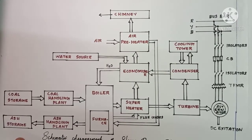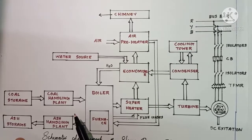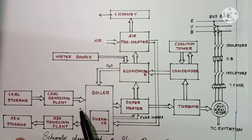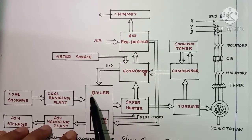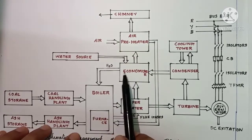At the coal handling plant, the coal gets pulverized — meaning it is crushed into small pieces and becomes powdered. These powdered pieces improve the overall efficiency of the steam power plant. The pulverized coal then enters the boiler.